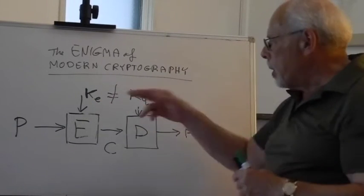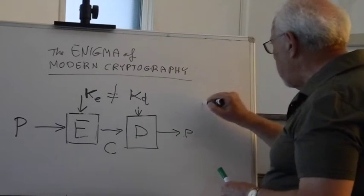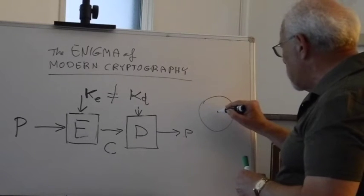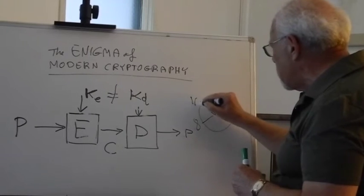The simplest example is the clock. I can encrypt my time of meeting with Alice from 8 o'clock to 8 plus 3, so it's 11.